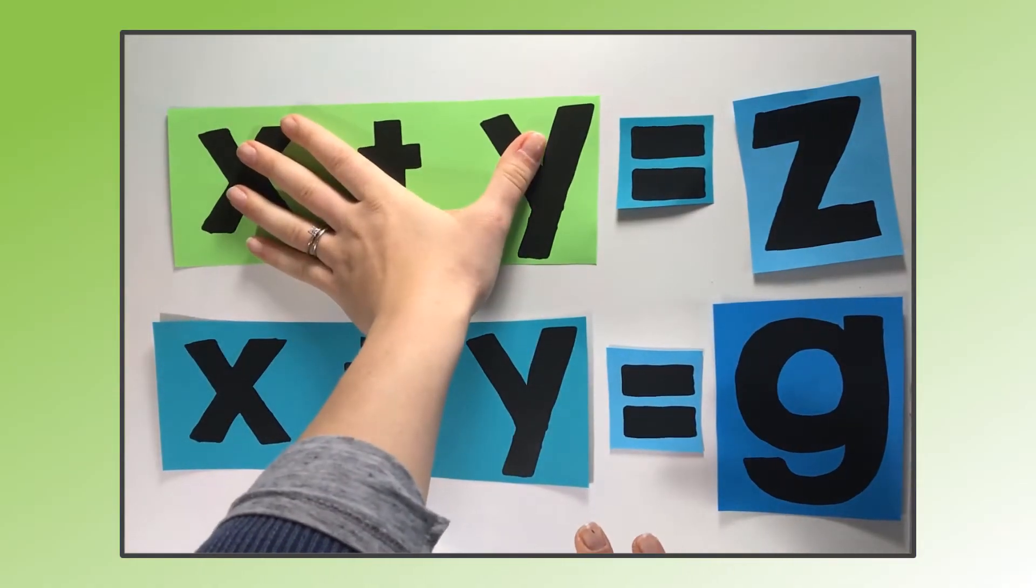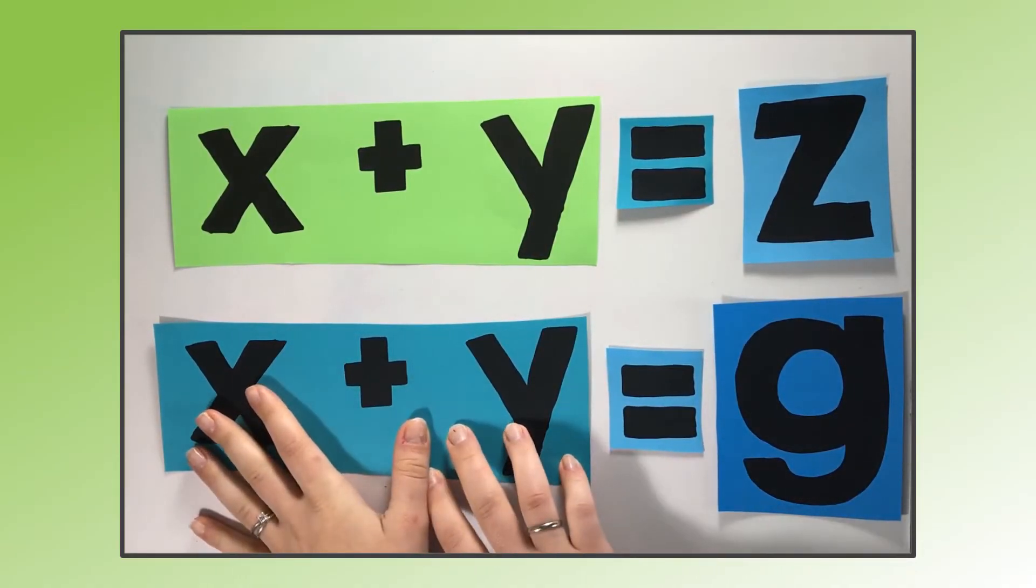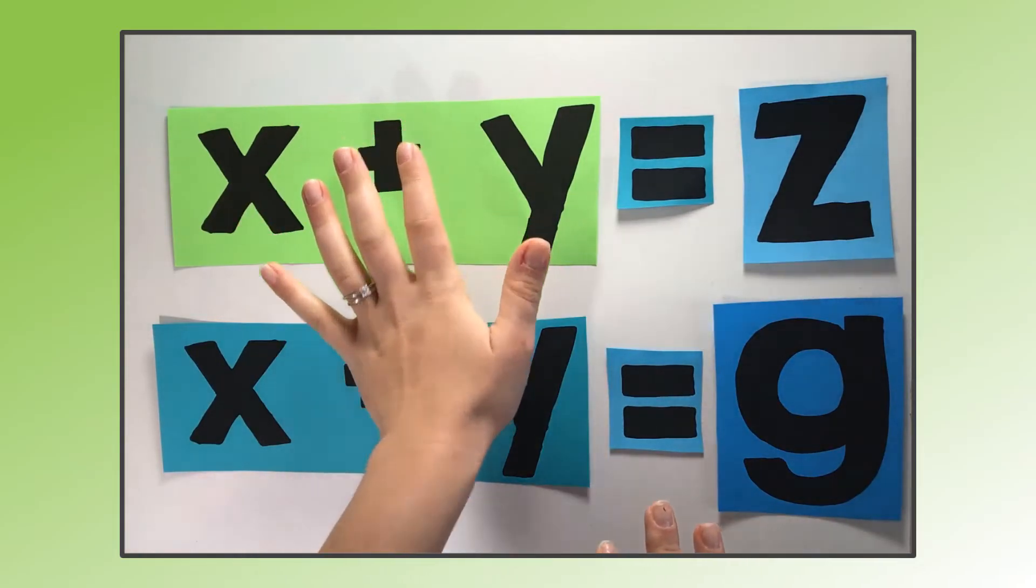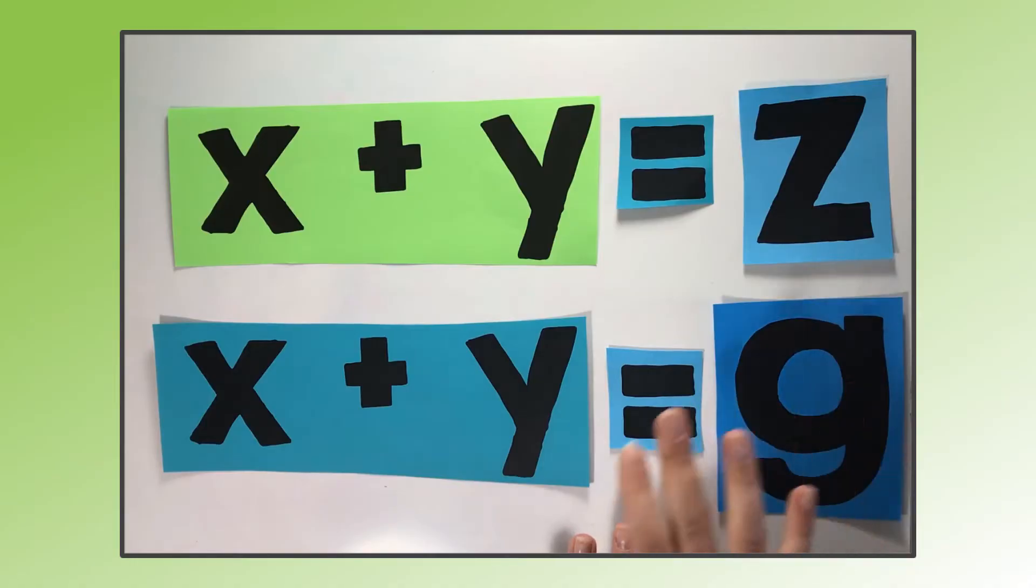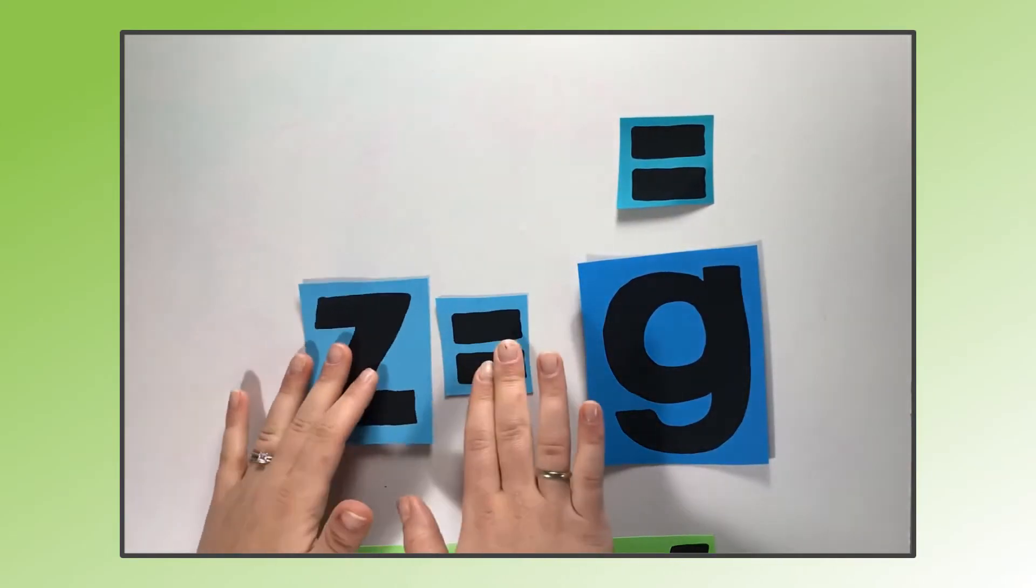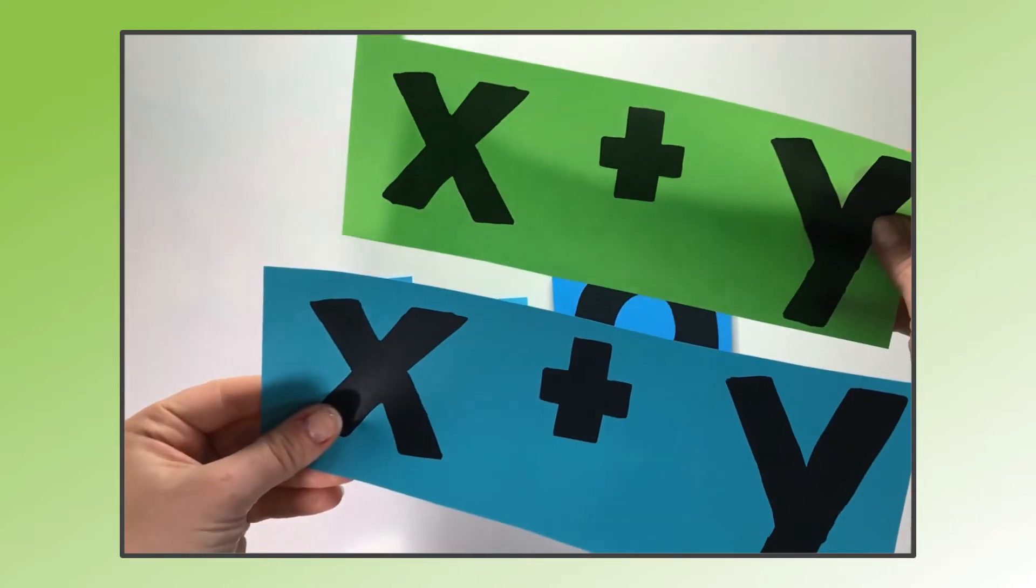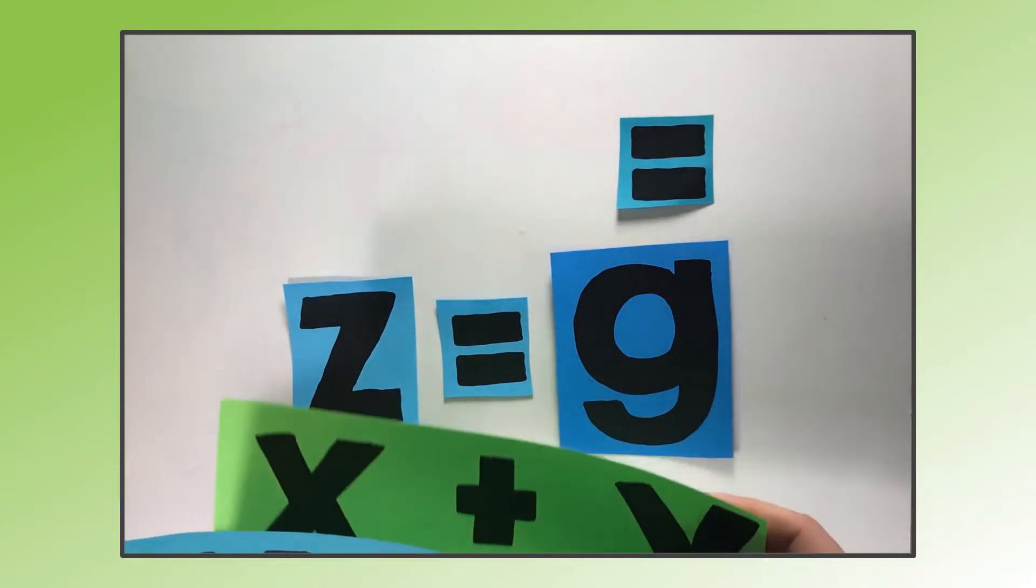So if x plus y, this quantity equals z, and x plus y, this same quantity also equals g, then they have to equal each other. So z must equal g. Since z and g are both equal to the same quantity, they're equal to one another. We know z and g must be equal to one another because they're equal to the same quantity. That's the transitive property.